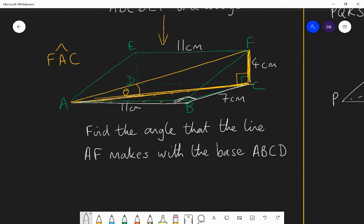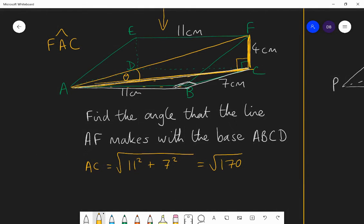So in effect, AC is the hypotenuse of the triangle ABC. So the length AC is equal to the square root of 11 squared plus 7 squared. So it's the square root of 121 plus 49. It's the square root of 170. I'm not going to evaluate that. That is already evaluated. It is root 170. Don't try and turn that into a decimal value because it's much more accurate, just leaving it as the root of 170.